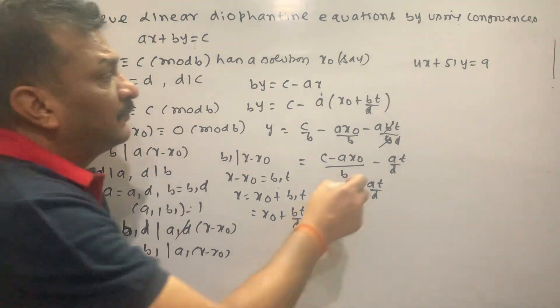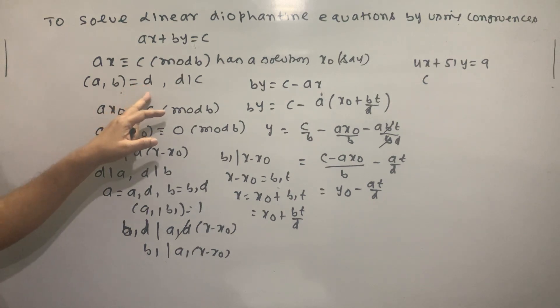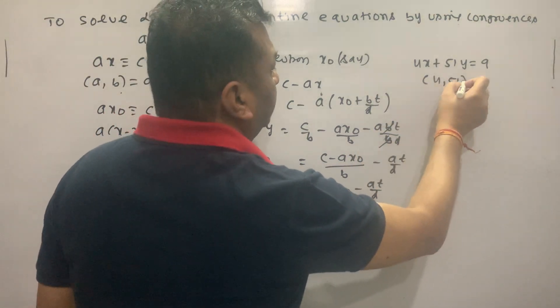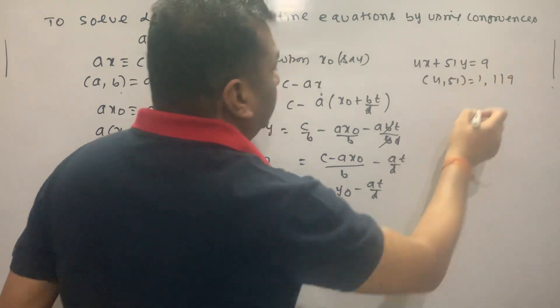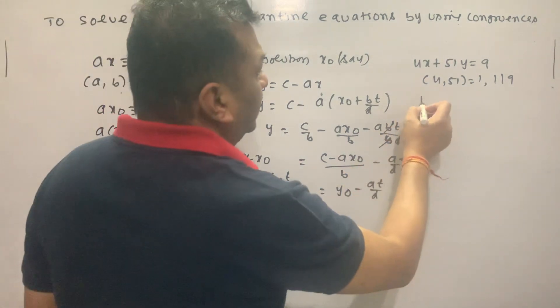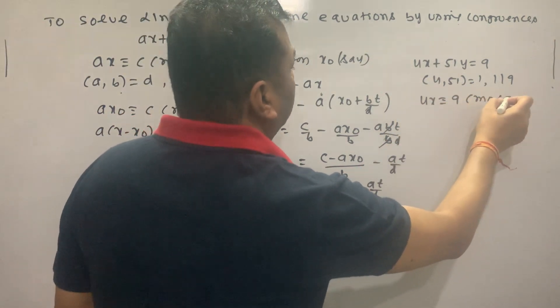So how do we do it? 4 and 51 have common divisor D equals 1, and 1 divides 9. So this has a solution. Now we write 4X congruent 9 mod 51.